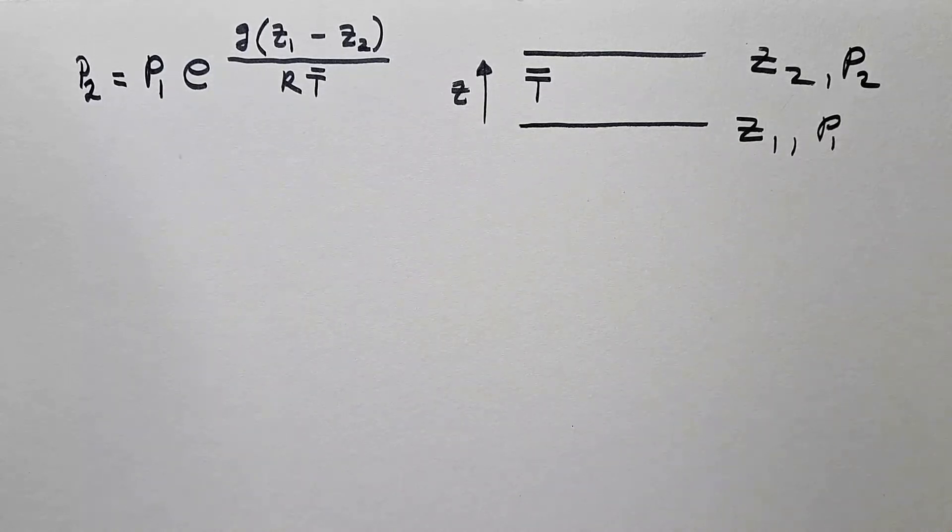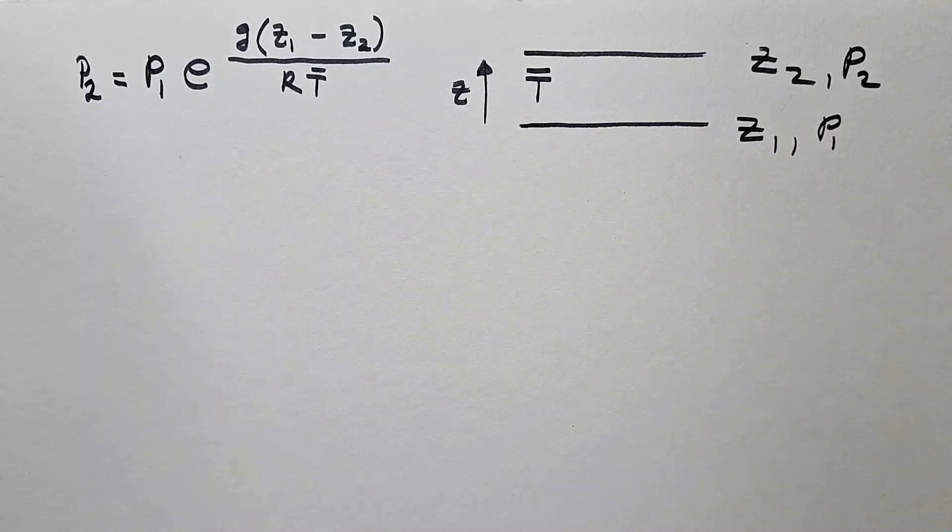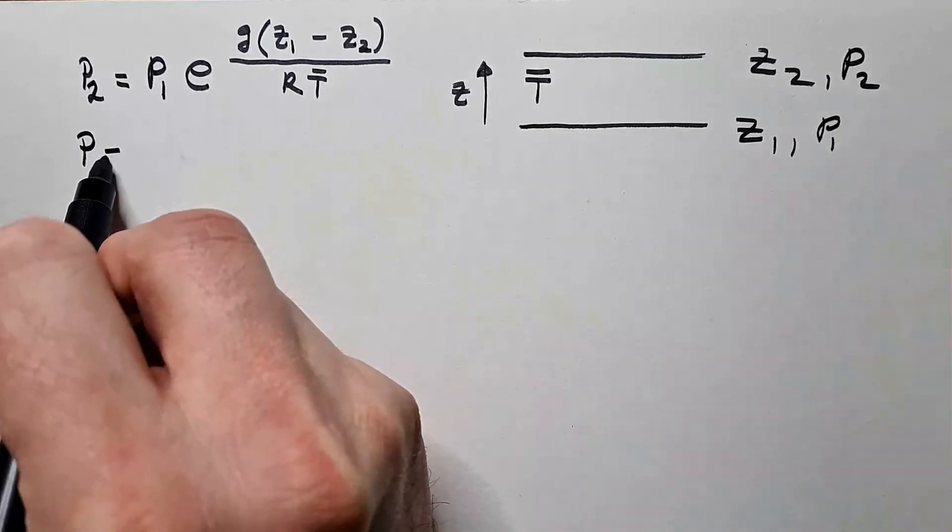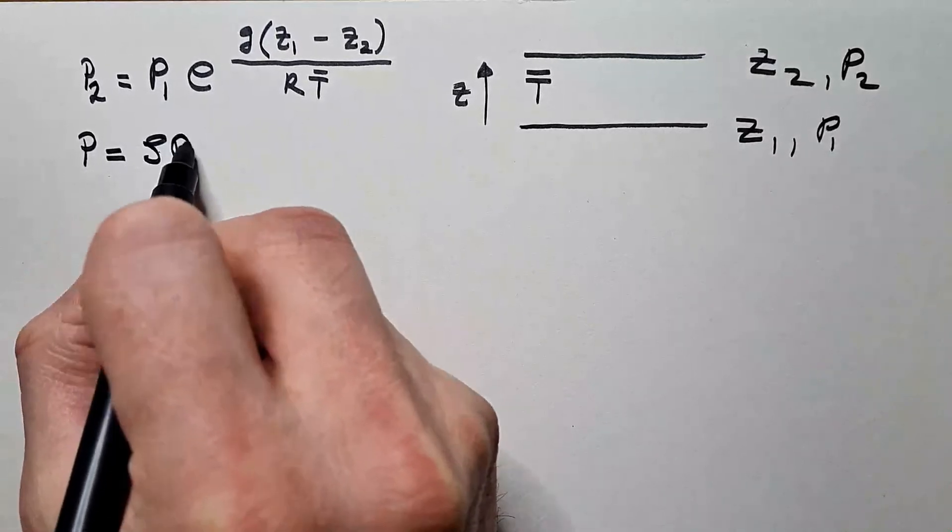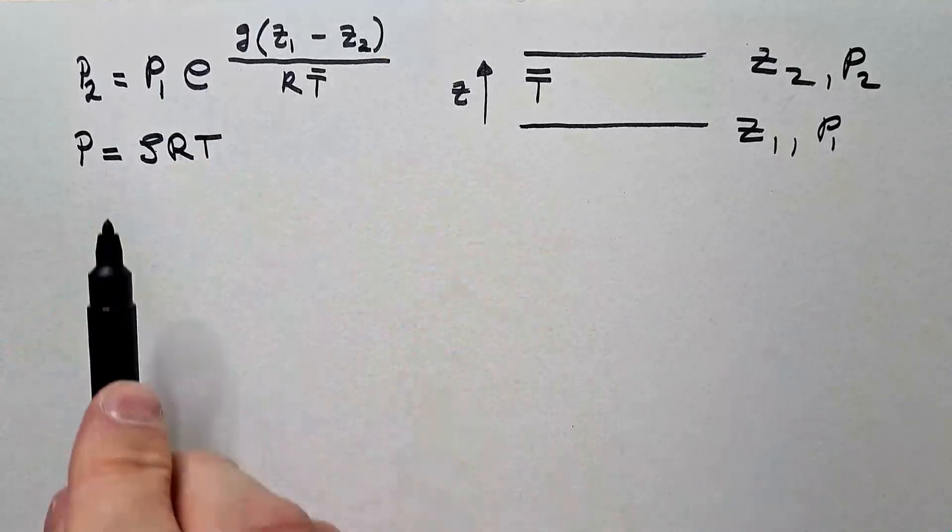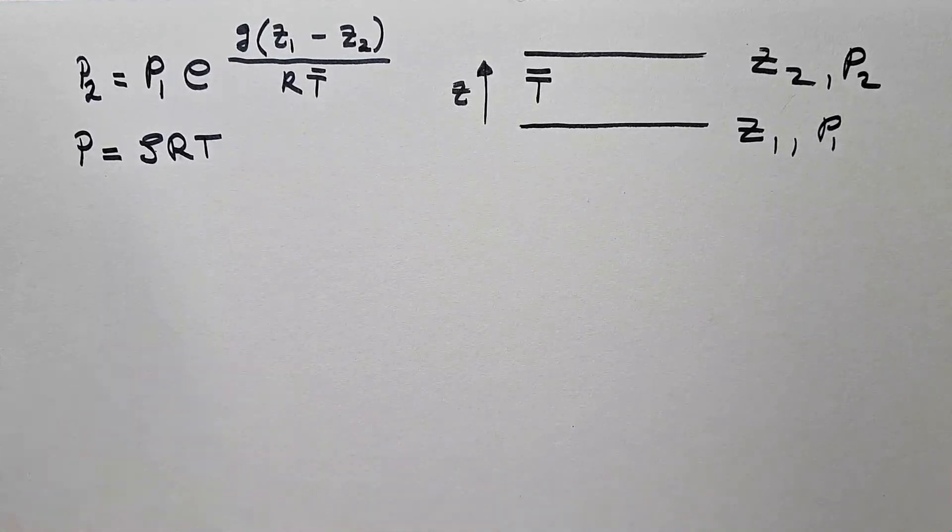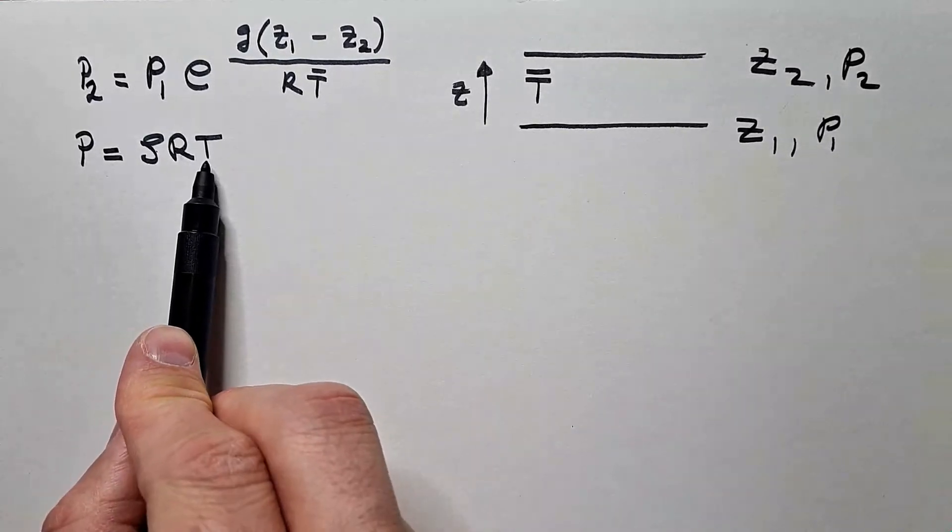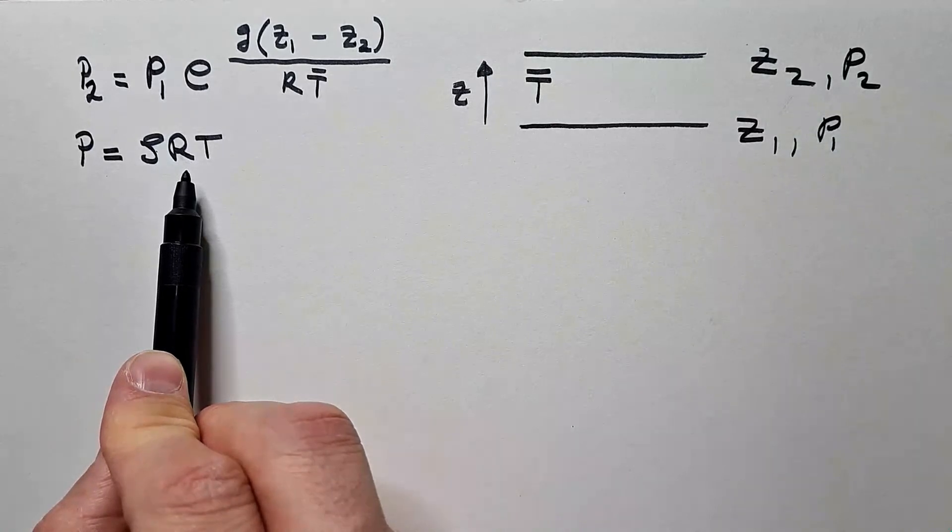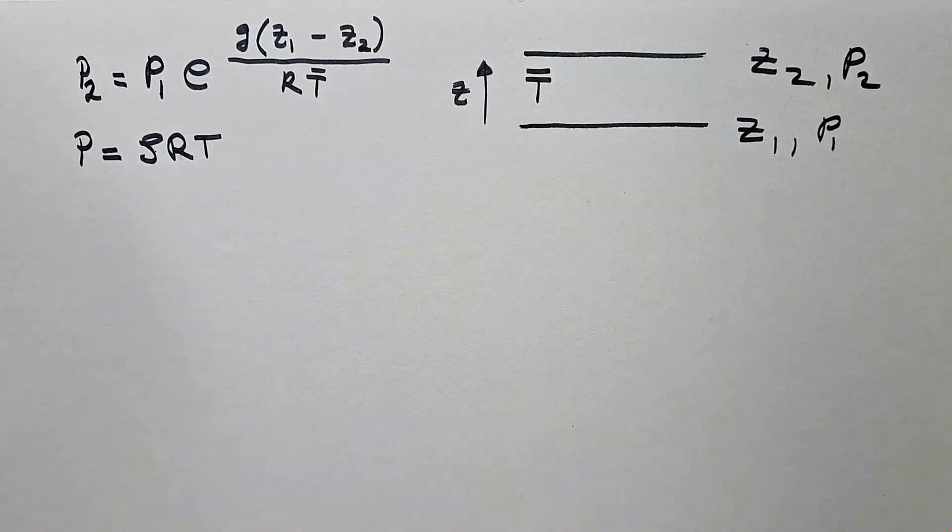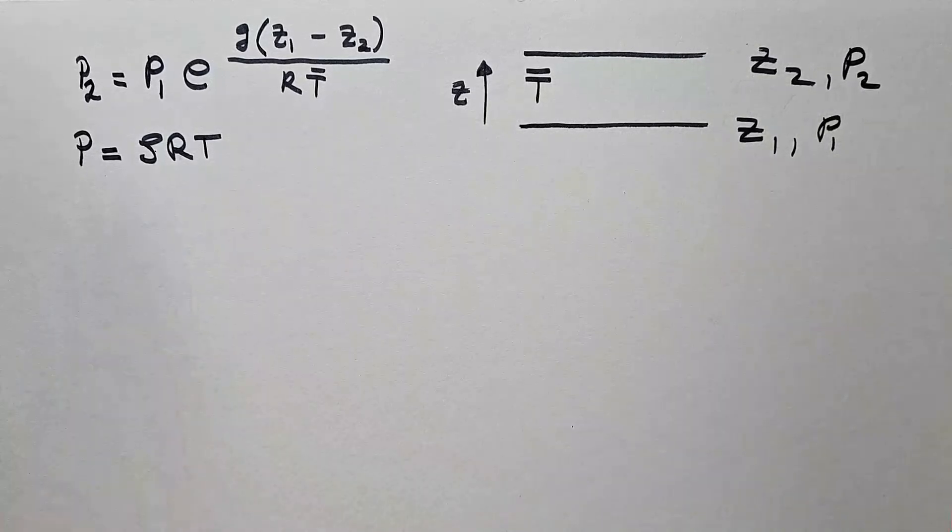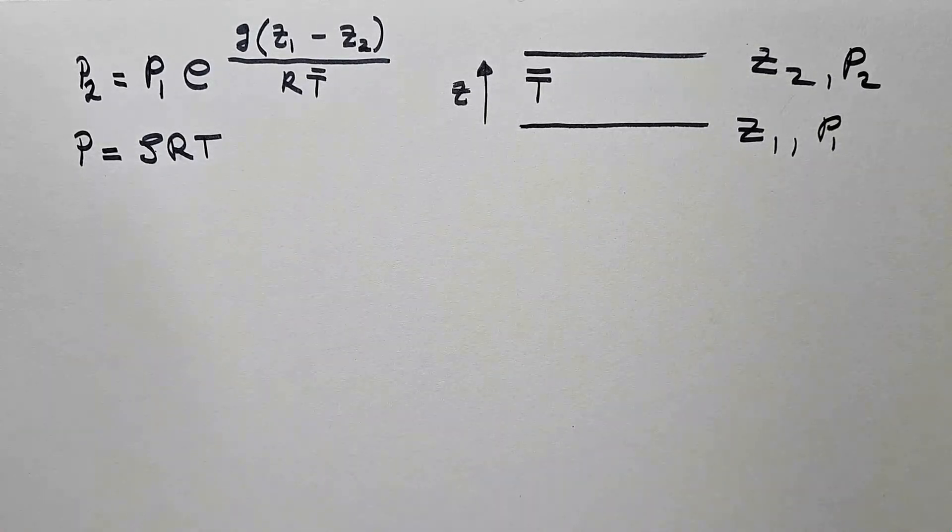To derive how the density is changing with height, we will use again equation of state that says pressure is rho RT. Namely, equation of state relates pressure, density, and temperature. If you are not familiar with this equation, for now you will have to believe me, but in the relatively near future I will derive it explicitly when I start my playlist on kinetic theory of gases.